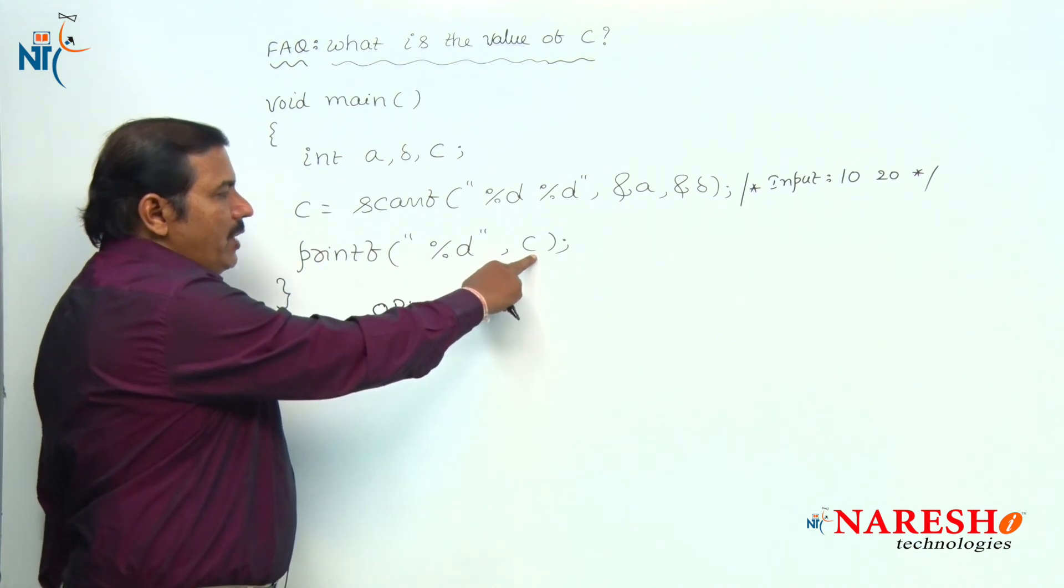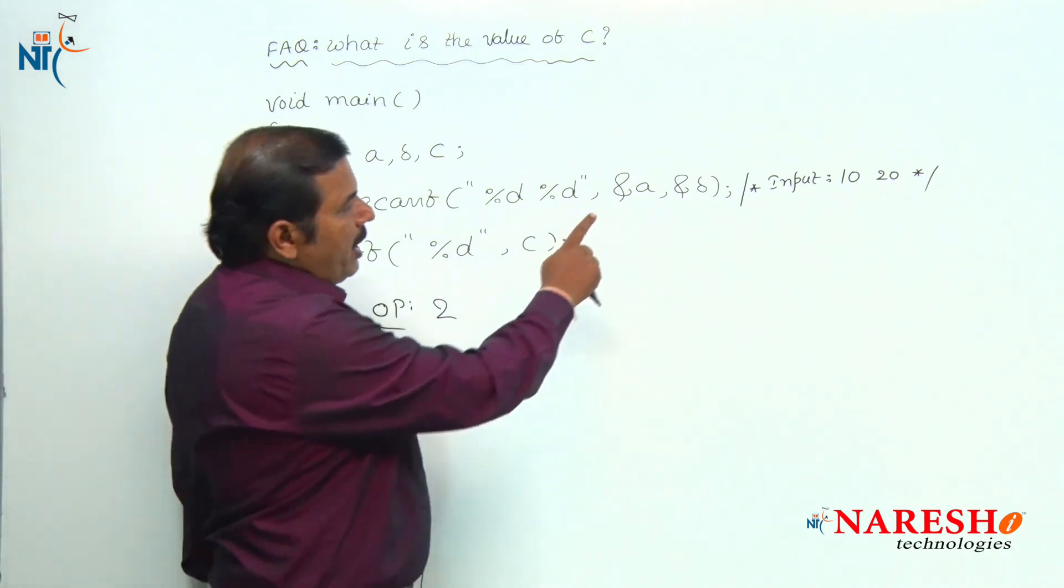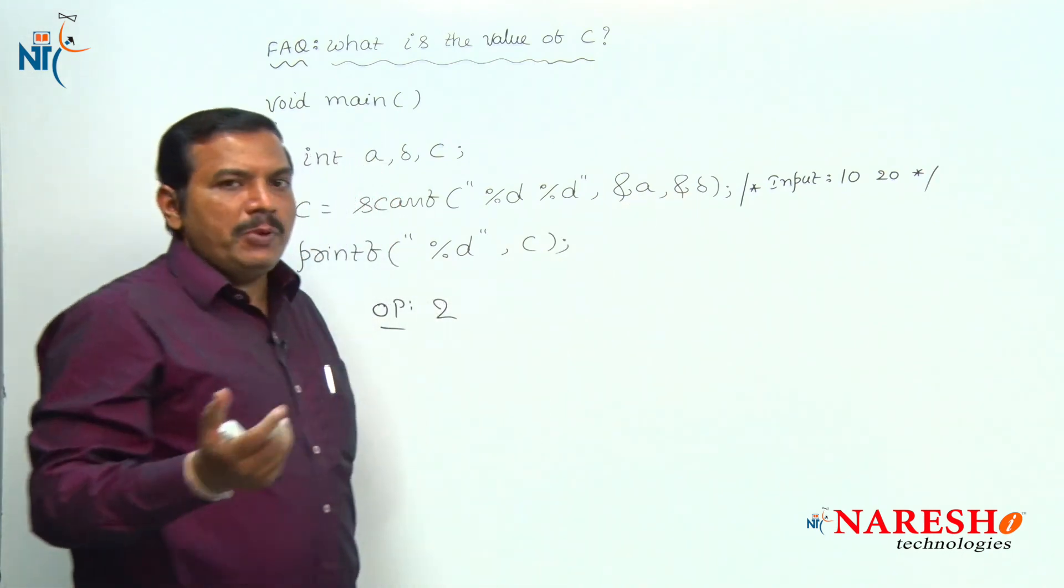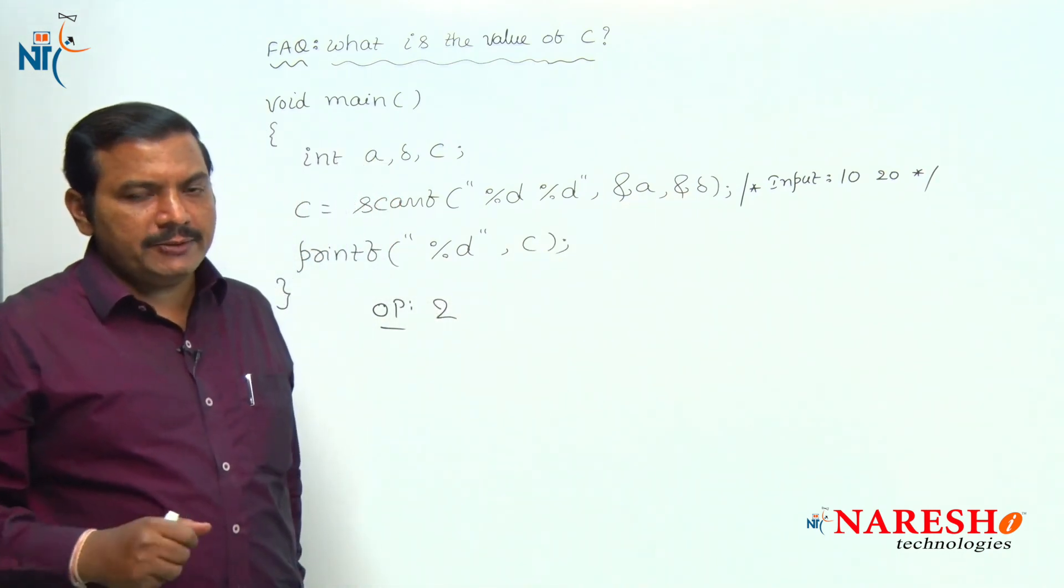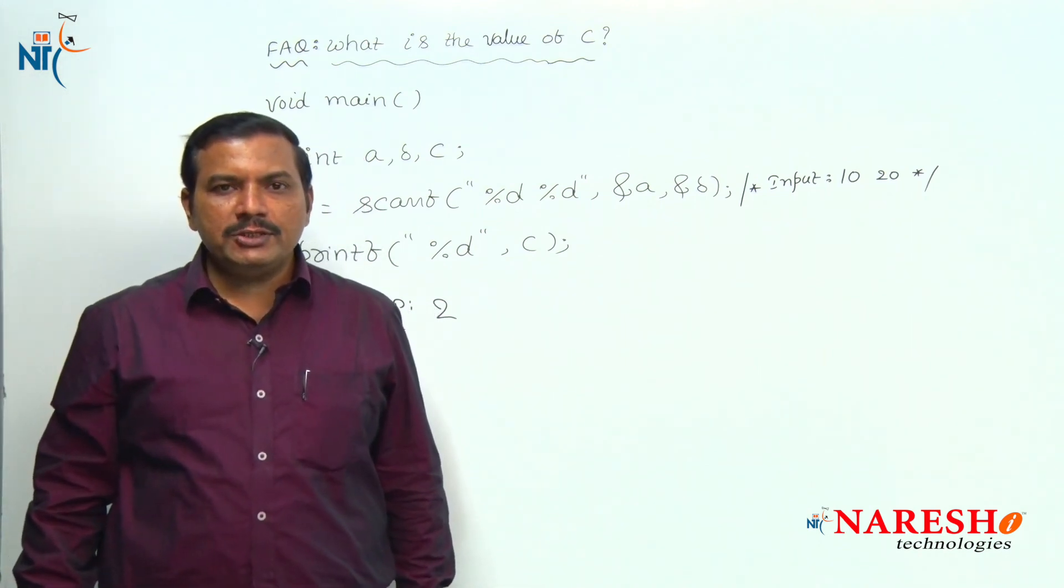If I printed the value of c onto the screen, it displays 2. If I printed the values of a and b, it displays 10 and 20 onto the screen. Thank you for watching this video, for more videos subscribe Naresh IT channel.